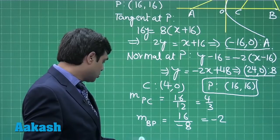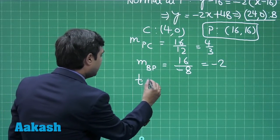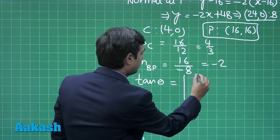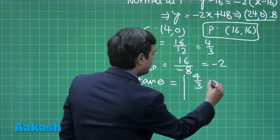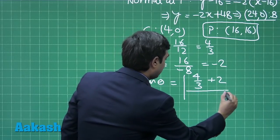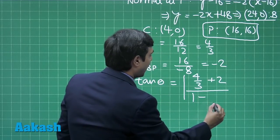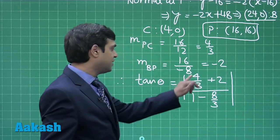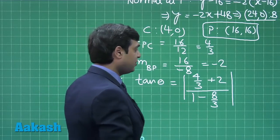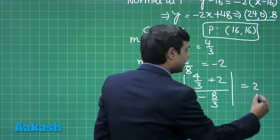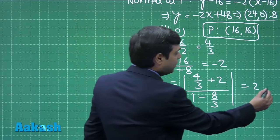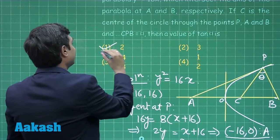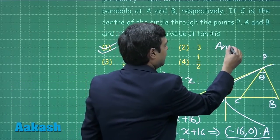Using these two slopes, applying the formula for tan θ equals modulus of (4/3 + 2) divided by (1 - 8/3). Simplifying we can see it is 10/3 divided by -5/3. It is modulus, so tan θ comes as 2. The required value tan θ = 2, hence the correct answer is option 1.